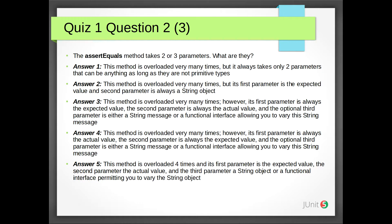Answer 1: This method is overloaded very many times, but it always takes only two parameters that can be anything as long as they are not primitive types. Answer 2: This method is overloaded very many times, but its first parameter is the expected value and second parameter is always a String object.